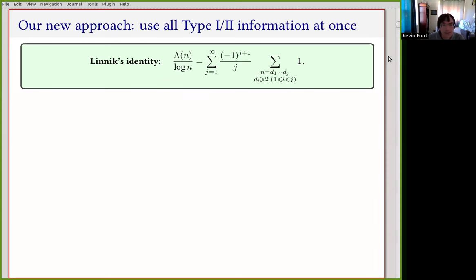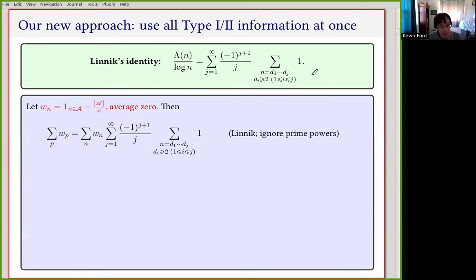I'm going to give a very short rough idea of how this is done. We start with the famous Linnik identity for lambda(n) over log(n), where lambda is the von Mangoldt function. This is essentially the indicator function of primes on the left, if we ignore the prime powers. On the right we have this multiple divisor sum, where each of the divisors is at least 2. As a first step, I look at this quantity I call W(n), which is a normalized indicator function of n being in our set A, normalized to have average value 0.